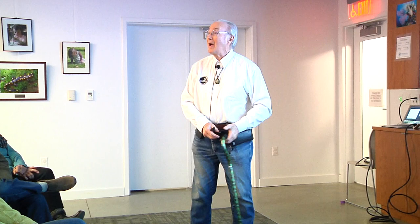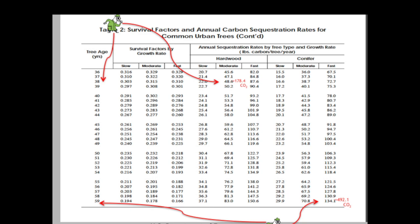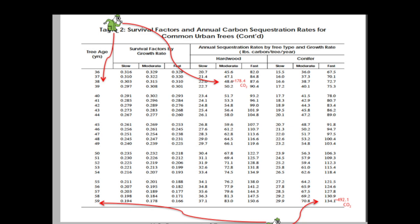Here's a US Department of Energy study — they took urban trees that get planted and tried to figure out how much carbon was stored per tree per year, going out to 59 years. Let's look at a 38-year-old hardwood growing moderately well. They say it sequesters 48.6 pounds of elemental carbon. If you want to convert that to the amount of CO2 that came out of the atmosphere, you multiply by a factor I'll get into later.